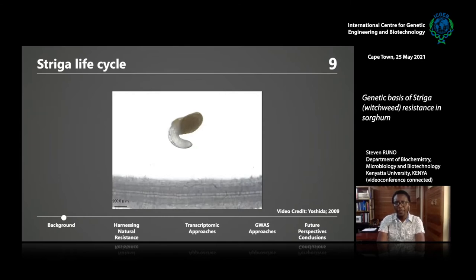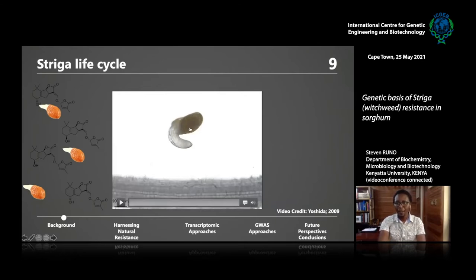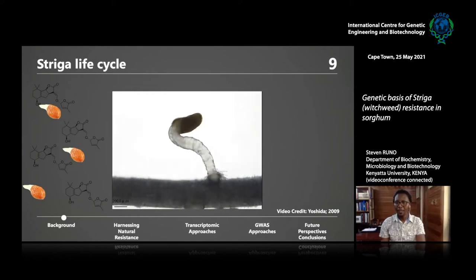The Striga life cycle starts with Striga getting stimulated to germinate by the host — it does not germinate on its own. It is dependent on host signals for germination. It locates its host very effectively by sensing germination stimulants called strigolactones, a class of hormones that not only stimulate Striga to germinate but have other physiological roles in the plant. Upon perception of these hormones, Striga germinates very rapidly within 12 to 24 hours.